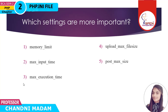Third is max execution time — the maximum allowed execution time for each script, measured in seconds. Fourth is upload max file size — the maximum file size your server will allow to be uploaded, measured in megabytes.